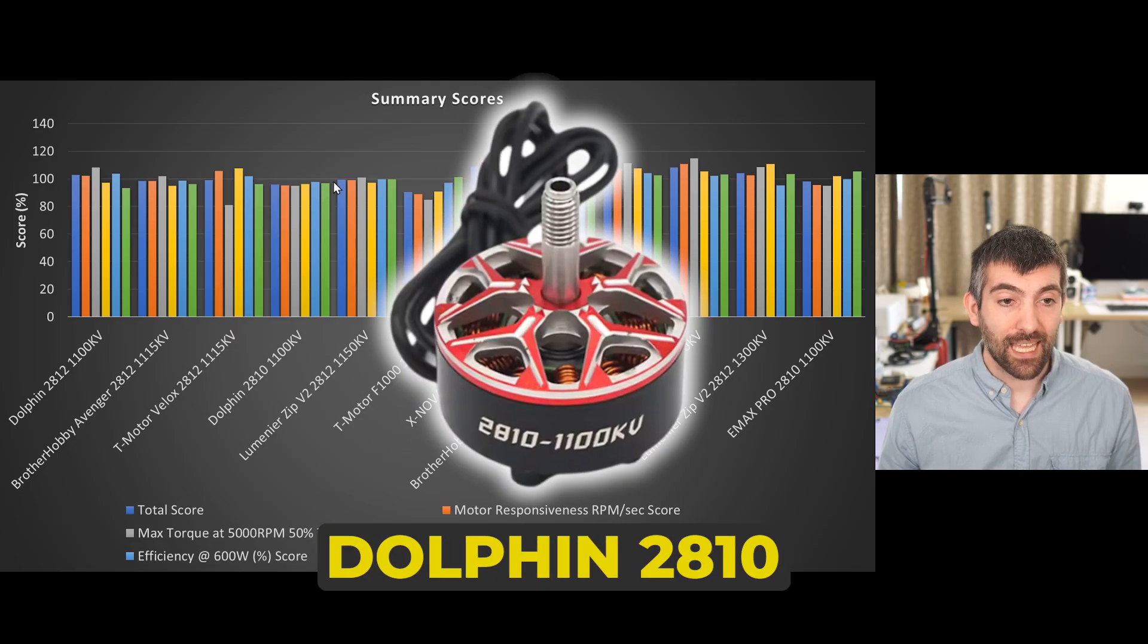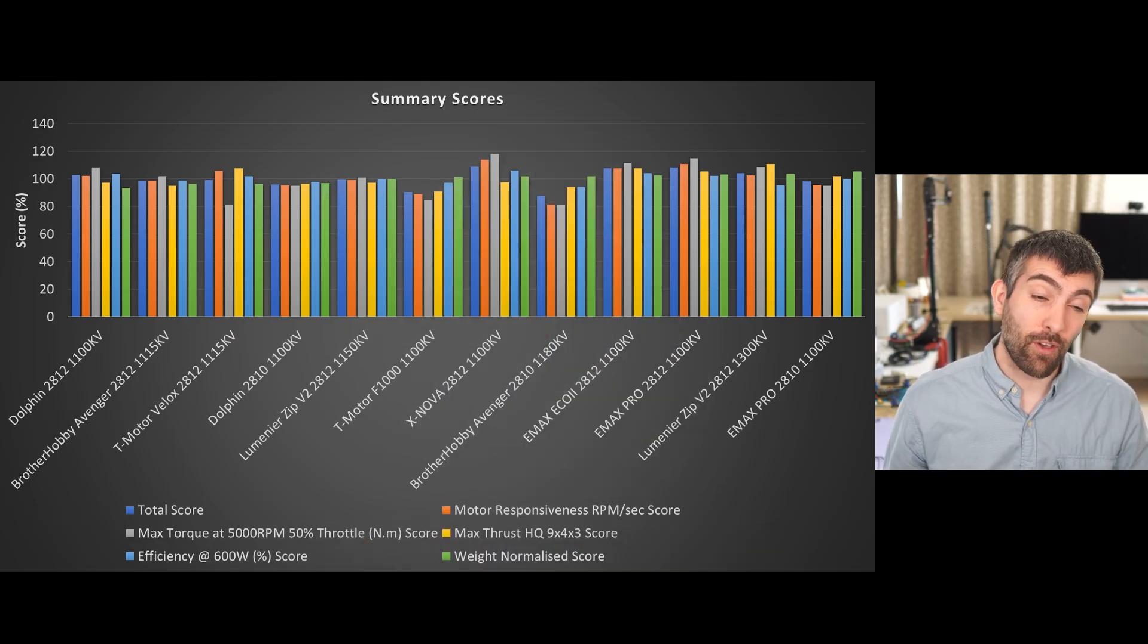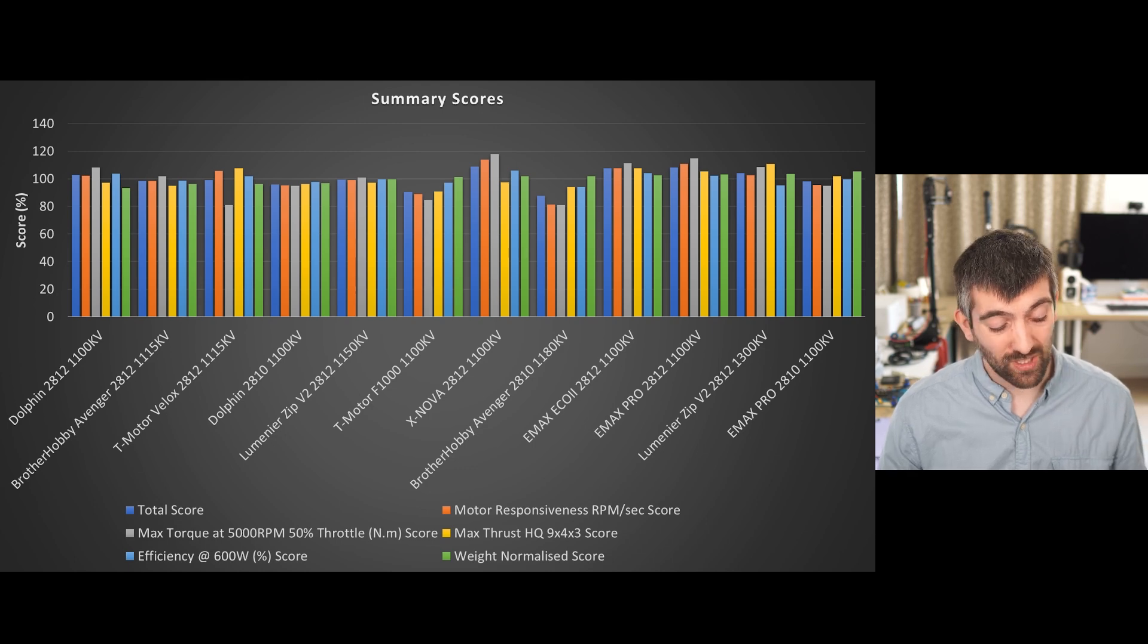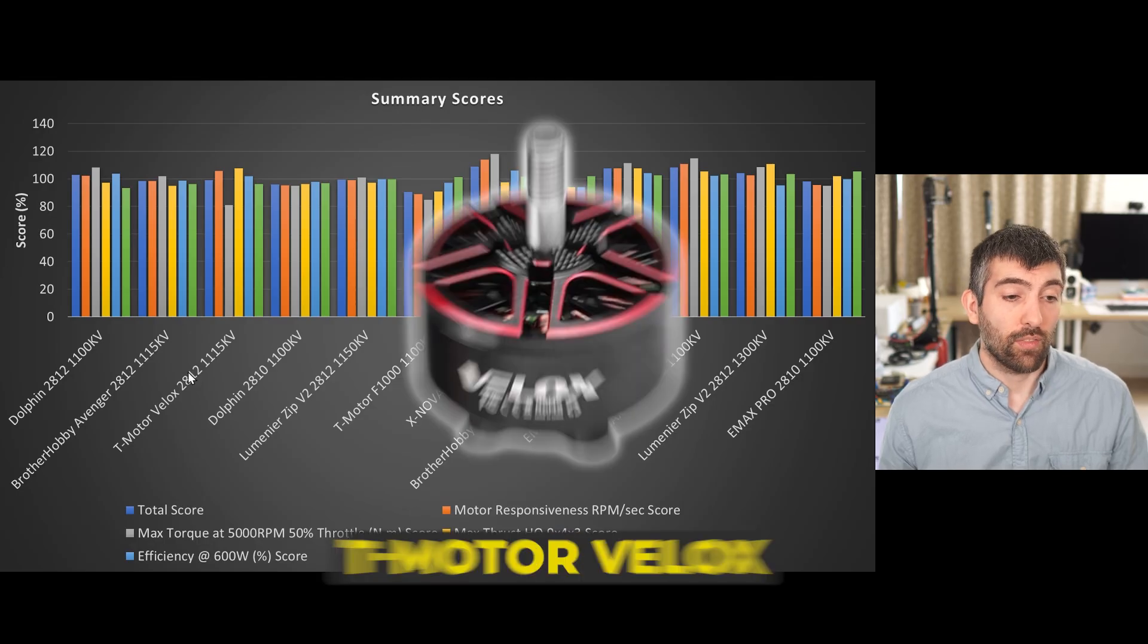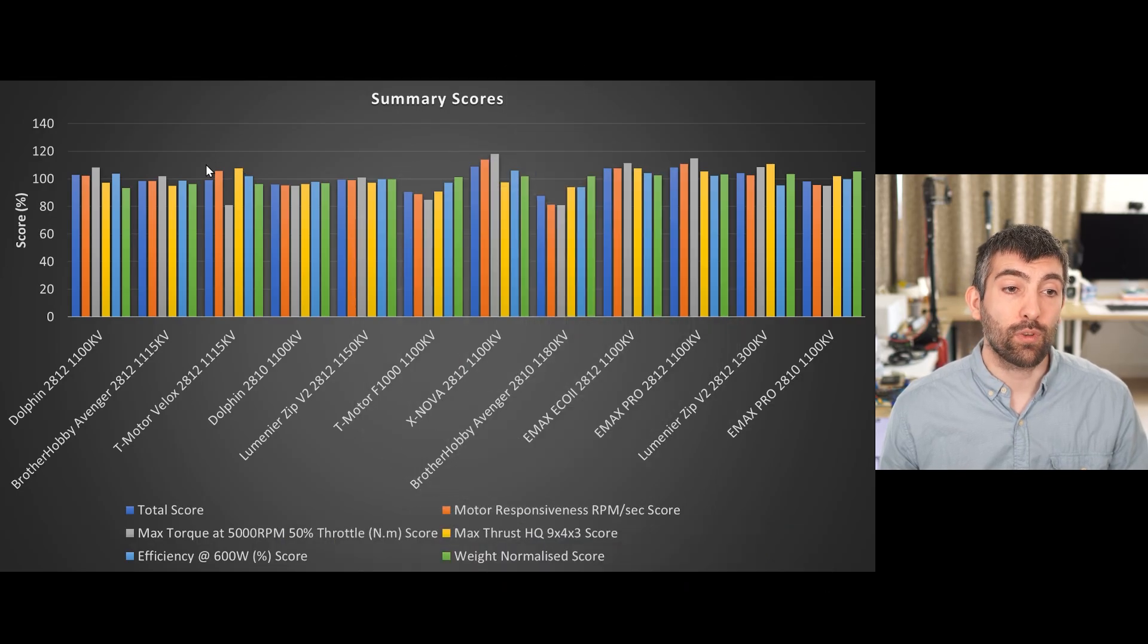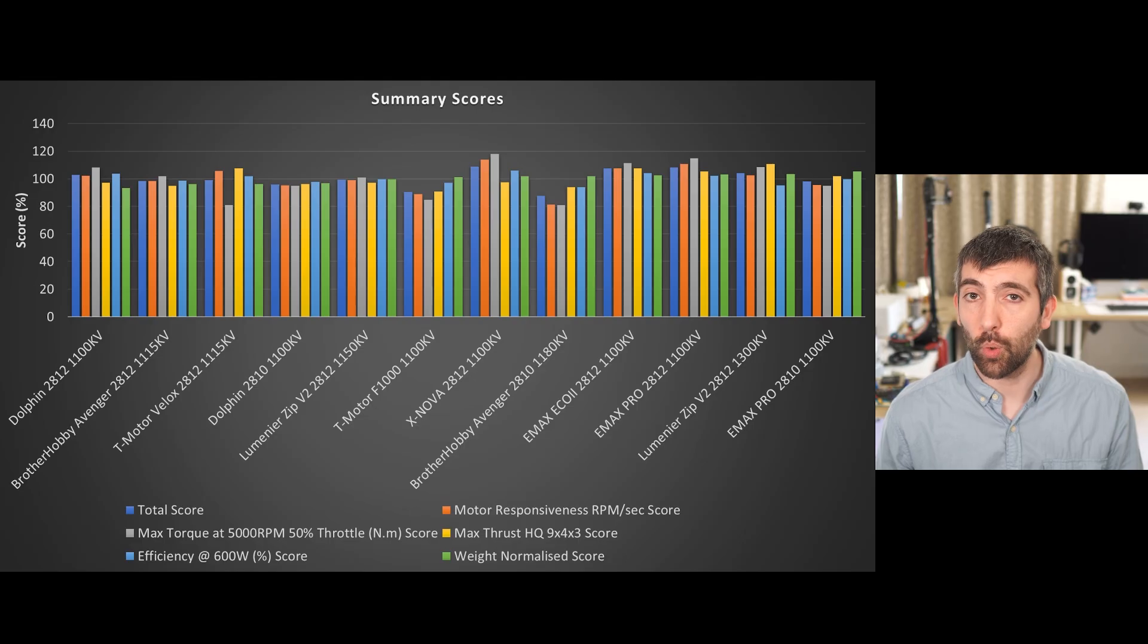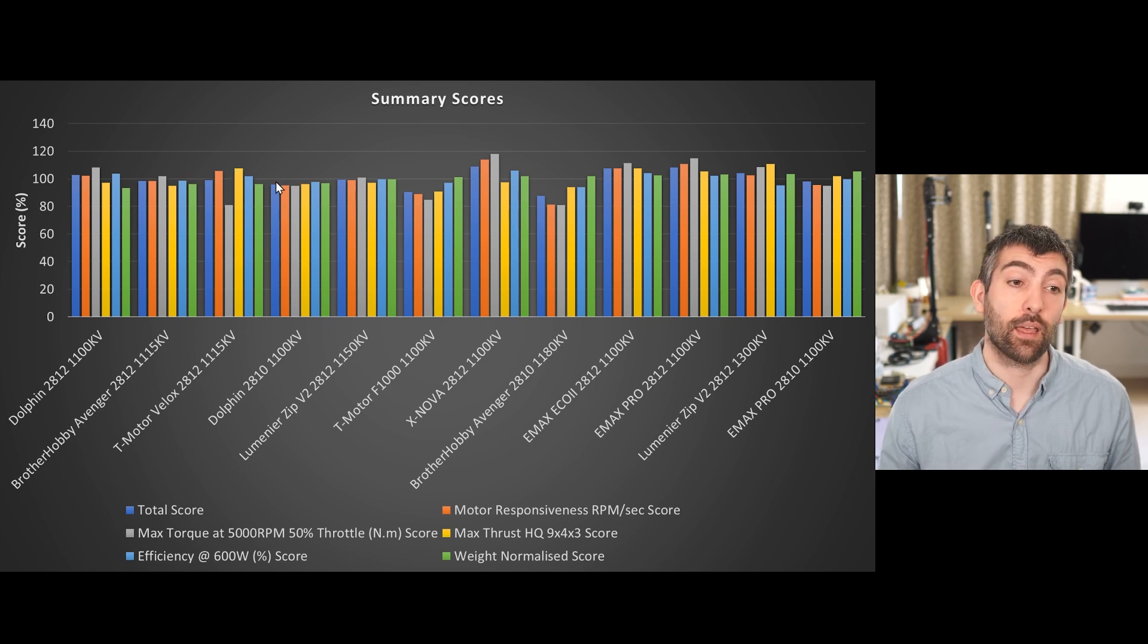The Dolphin 2810, very consistent performance but obviously it's a smaller motor, it's a lighter motor and the performance kind of follows the weight. The T-Motor Velox 2812 really struggled in terms of the maximum torque that it was able to generate, and I did retest the motor because that seemed an unusual result. But overall that torque score really letting it down. If you're not too worried about the peak torque that the motor can deliver at low RPMs, you're only ever going to be using it on a relatively light pitch prop, then it could still be a good choice and it's among the best performers in some of the other categories so it's worth considering.